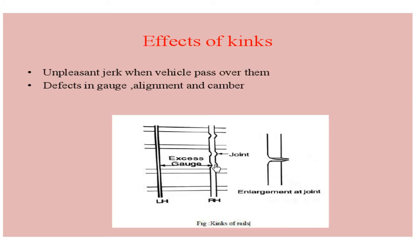You can see here the kink formation at the joints. There is an excess gauge formed — this is the proper gauge length which is to be maintained, with the left-hand and right-hand sides of the rail. If properly maintained, you have a proper gauge length, but when kinks are formed, there will be excess gauge. Because of this, when the train is moving over these regions, you will have an unpleasant jerk. There will be defects in gauge, alignment, and camber, as well as an enlargement at the joint, causing an unpleasant jerk when the vehicle moves over them.